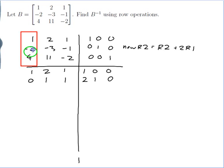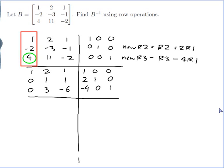I'd also like a 0 in this spot here. To do that, my new row 3 is my old row 3 minus 4 of row 1. So: 4 minus 4×1 is 0; 11 minus 4×2 is 3; minus 2 minus 4×1 is minus 6; 0 minus 4×1 is minus 4; 0 minus 4×0 is 0; 1 minus 4×0 is 1. Excellent — now I have the first column of the identity.